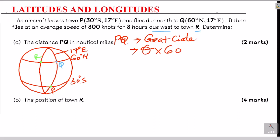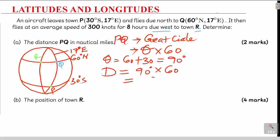The latitude difference: Q is 60 degrees north and P is 30 degrees south. Since they are on opposite sides of the equator, we add: 60 plus 30 equals 90 degrees. So the distance PQ equals 90 times 60, which gives 5,400 nautical miles.